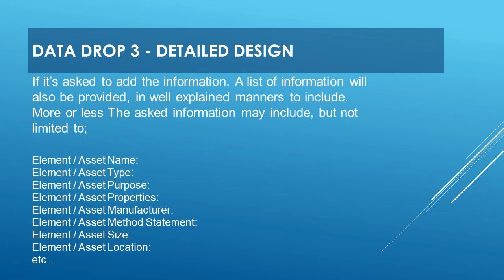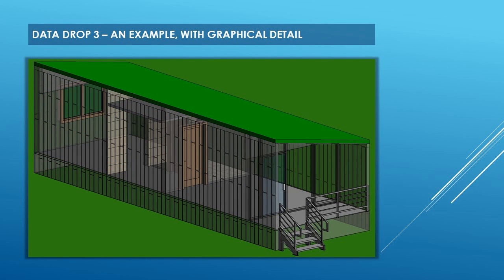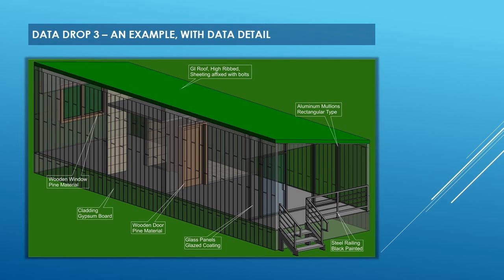If it's decided to add the information, a list of information will also be provided in well-explained manners to include. More or less, the asked information may include but is not limited to: element or asset name, type, purpose, properties, manufacturer, method statement, size, location, etc. Data Drop 3 — an example with graphical detail, and an example with data detail.